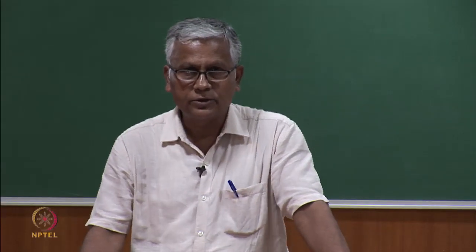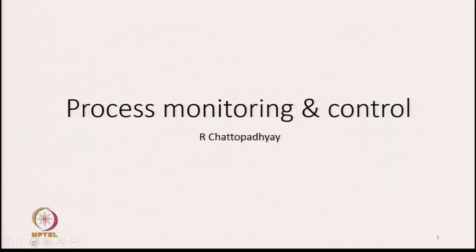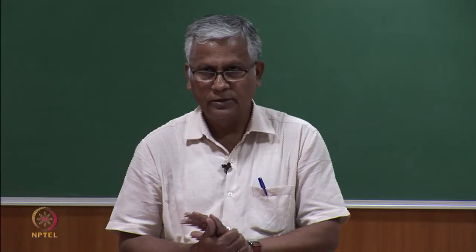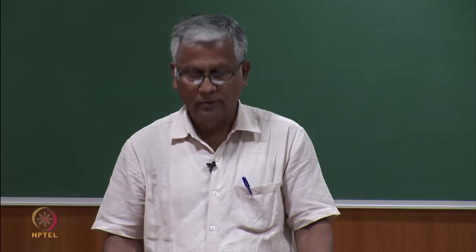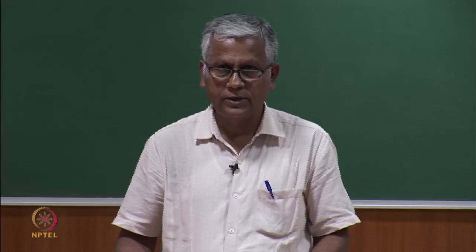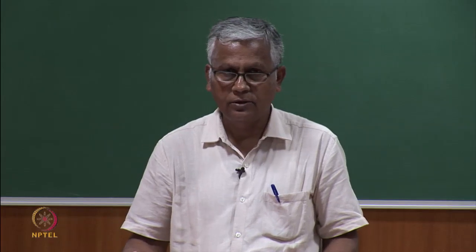Today's lesson is Process Monitoring and Control. The process has to be monitored. The idea behind monitoring is to make sure that whatever the process is supposed to do, it is fulfilling those objectives — we are not producing material which is not acceptable. At the same time, we have to see that the machine is working with full efficiency. Therefore, we need monitoring of the machines or the process.